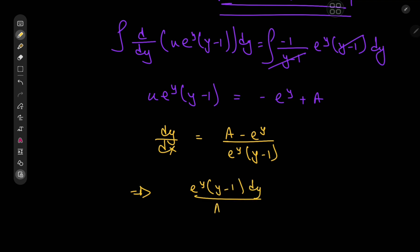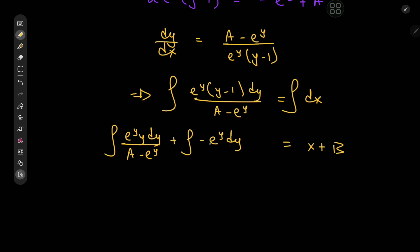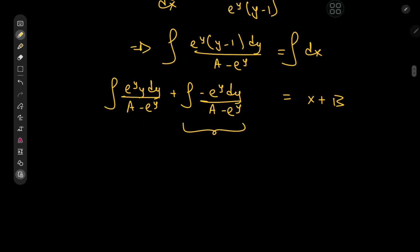This implies that e to the y times y minus 1 dy divided by a minus e to the y equals dx. Integrating the right-hand side gives x plus some constant of integration b. On the left we use linearity of integration to split into the integral of e to the y times y dy divided by a minus e to the y, plus the integral of negative e to the y dy divided by a minus e to the y. The second integral sorts out to log of a minus e to the y.